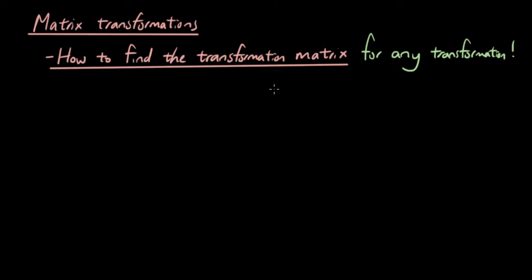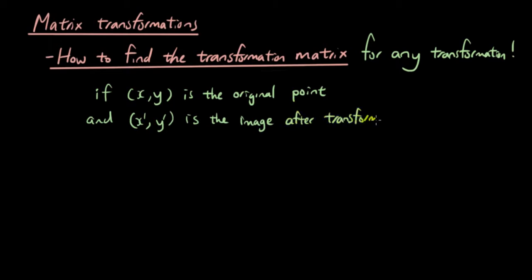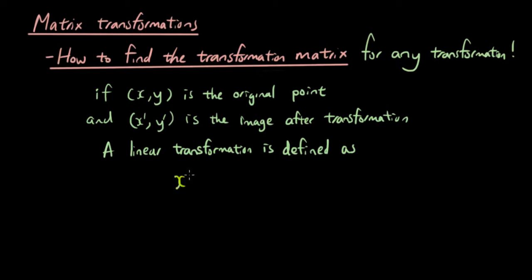Last lesson we talked about what a matrix transformation is made up of. Basically, if you have an original point with coordinates x, y, and x', y' is the image after the transformation, then a linear transformation is defined as x' equals ax plus by, and y' equals cx plus dy, where a, b, c, d can be any real number.